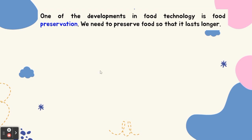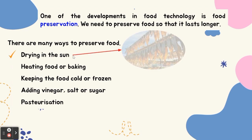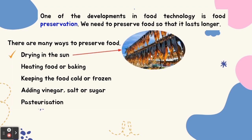One of the developments in food technology is food preservation. We need to preserve food so that it lasts longer. There are many ways to preserve food. First, drying in the sun — for example, drying fish in the sun. Second, heating food or baking.